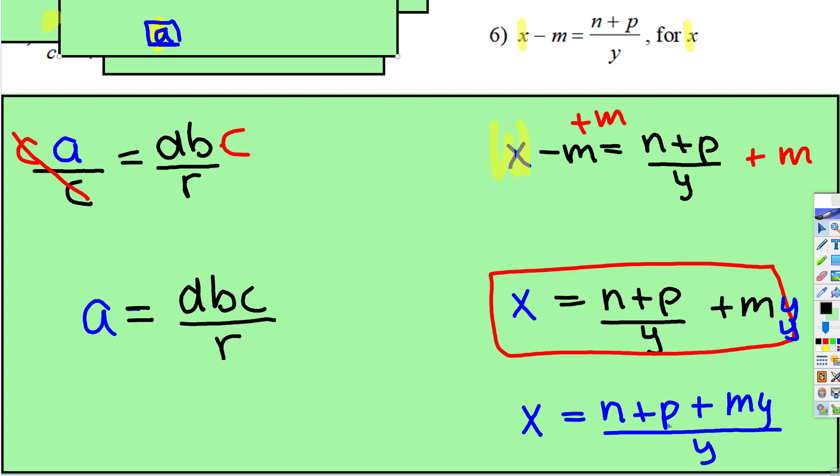In the numerator, n plus p plus my all divided by y is equal to x. But both of these scenarios are correct.